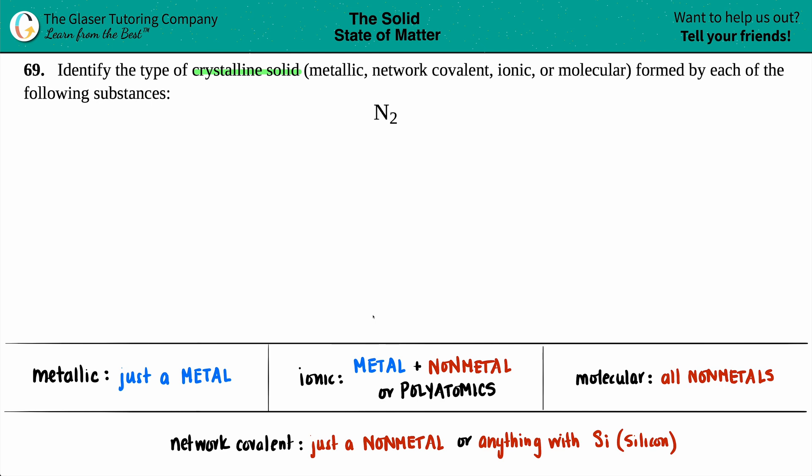Let's just work from left to right to figure out what is N2. So is this a metallic crystalline solid? Well, just know that the word metal is in the word metallic, so in order to be a metallic crystalline solid, you just need to see a single one metal. But I'm looking here, N2 and nitrogen on the periodic table is purely a nonmetal. So no metals here. This can't possibly be a metallic crystalline solid.